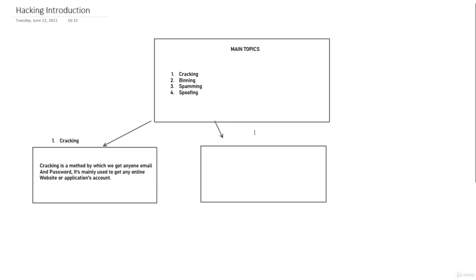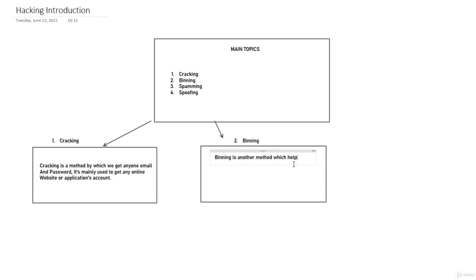Number two is binning. Binning is another method which helps us to get a new website or application subscription for free. It only works for time-limited offers.